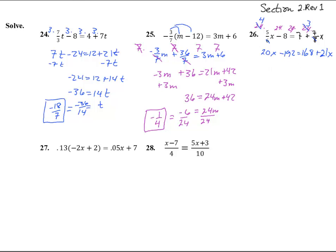Try to get these two x's together, so we subtract 20x minus 20x over here, and we're left with 168x equals negative 192. So subtract 168, subtract 168, and we get x equals negative 360.